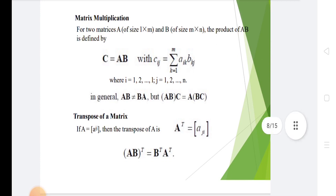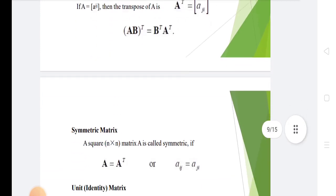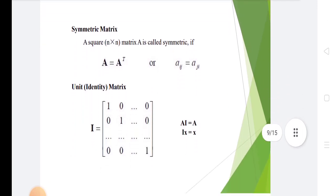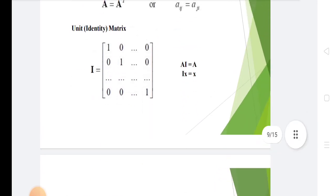In transpose of matrix, AB transpose equals B transpose into A transpose. In symmetric matrix, A equals A transpose. In unit matrix, I equals matrix of 1 0 0, 0 1 0, 0 0 1. A into I equals A.